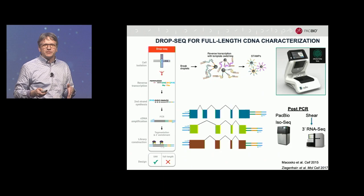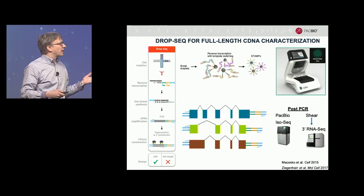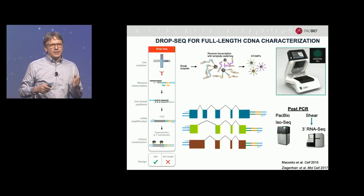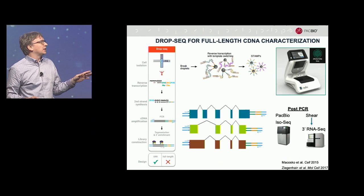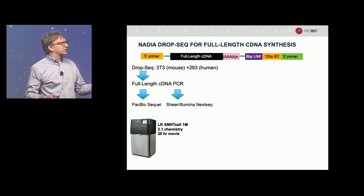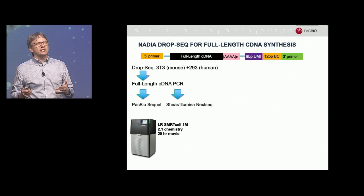The DropSeq platform we chose was the Nadia, a commercially available platform from Dolomite Bio — they're here at the meeting if you'd like to speak with them. And despite the shape of the machine, it is not a Panini press. We wanted to take the molecules coming out of the system and see whether they generate a high-quality cDNA product worthy of isoform analysis.